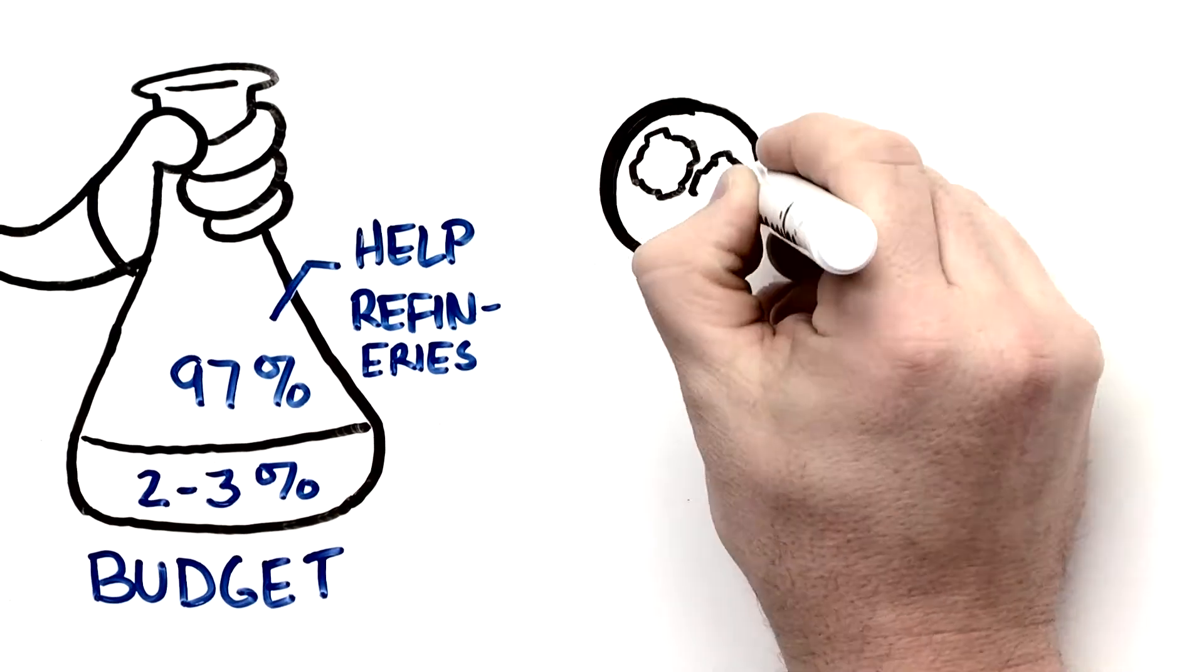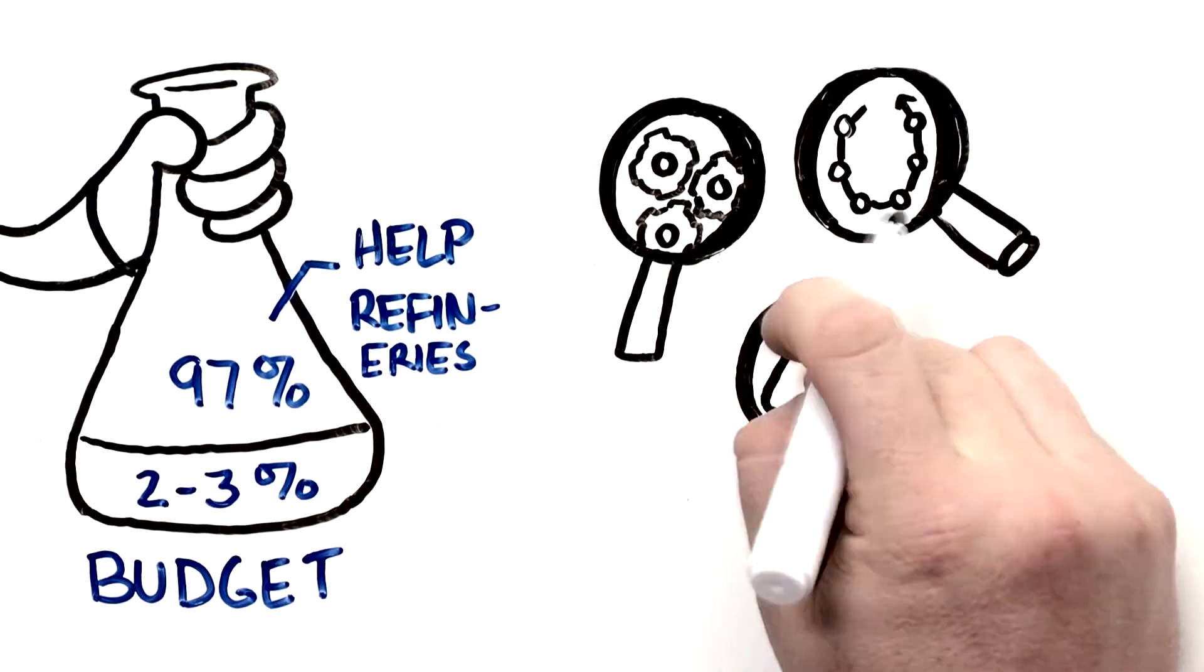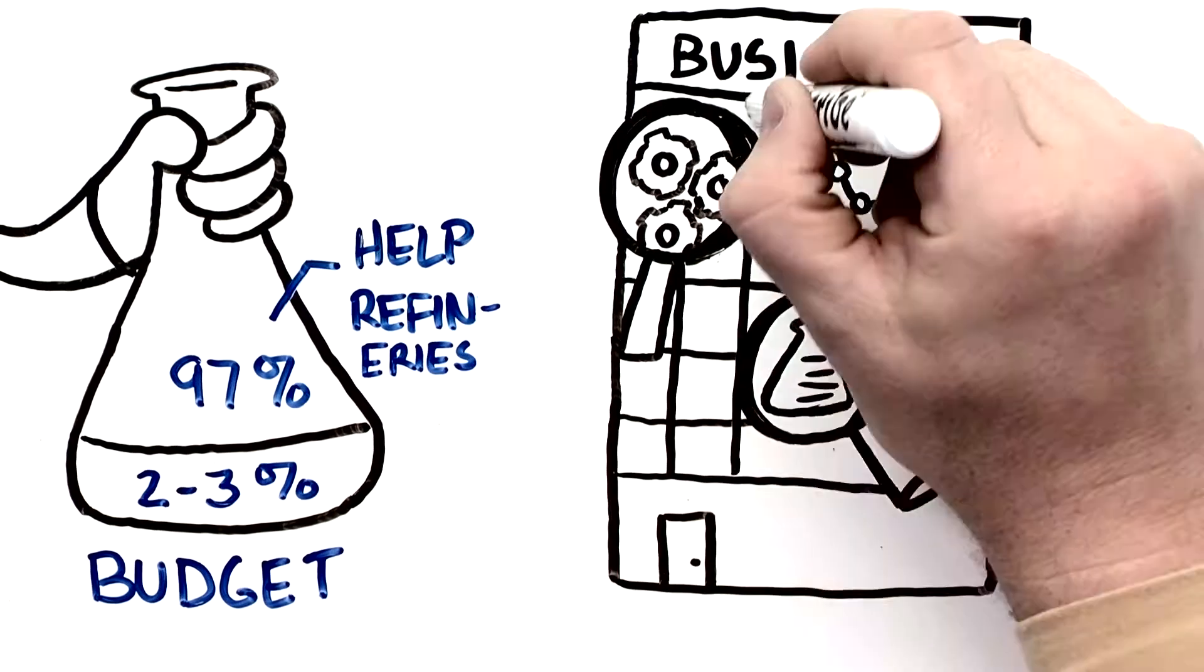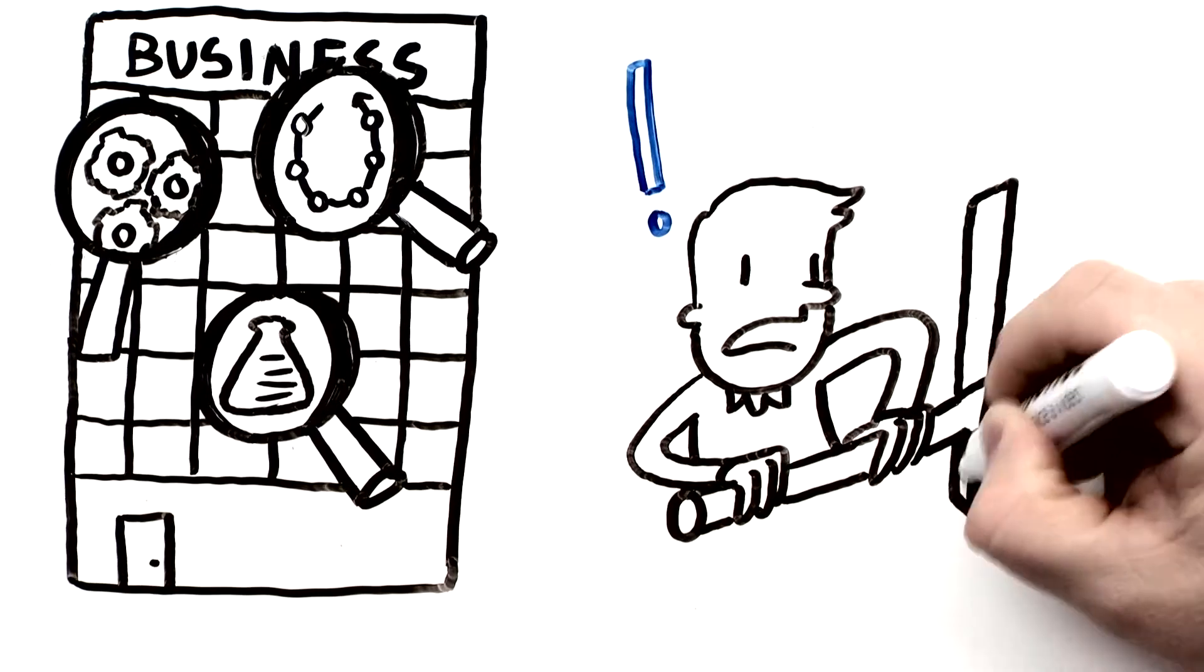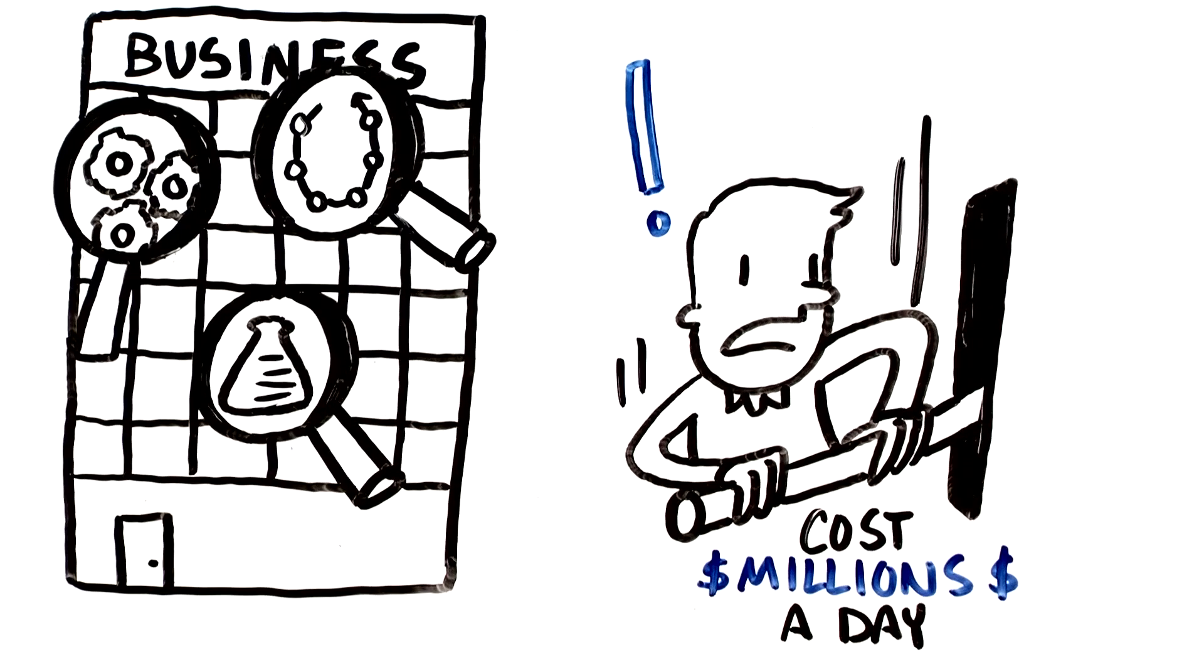Through a focused mechanical, operational, and chemical look at the business, we can help them avoid surprises that lead to unscheduled shutdowns, which can cost them millions of dollars a day.